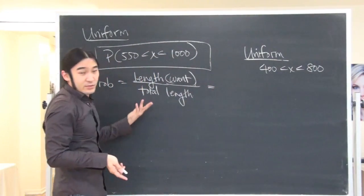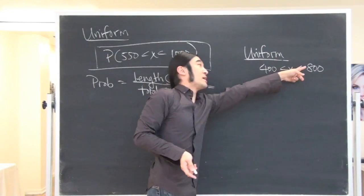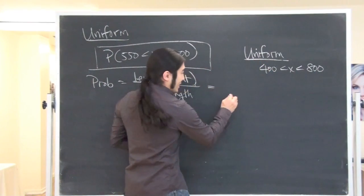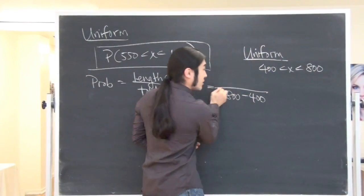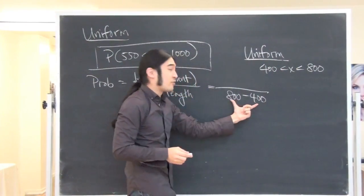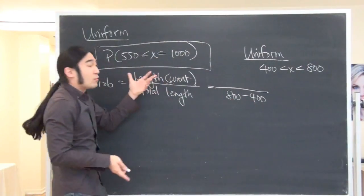Okay, so, if we're doing this, then what's the total length? What are the possibilities? Well, it's a range from 800 to 400, so I think that's just, like, literally, if you stuck this on a number line, it's only 400 points, right? Okay, what about what you want?